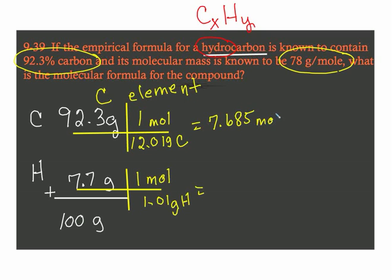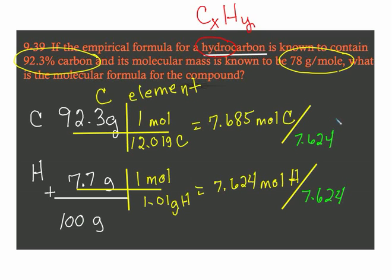Percent to mass. Mass to moles. So I have 7.685 moles of carbon, 7.624 moles of hydrogen. Percent to mass. Now that's moles in 92.3 grams. That's moles of hydrogen in 7.7 grams. I need a mole ratio. Mole ratio divide by the smallest. So I'm going to divide by 7.624 and 7.624. And those are both very close to 1. So that means that my empirical formula is CH. So that's my empirical formula.